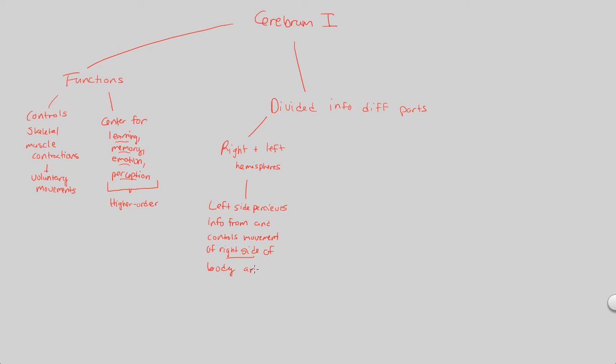And also vice versa. So what we also notice is that the right side of the cerebrum is going to perceive information from and control movement of the left side of the body. So this is kind of an opposite orientation that we see. The right part of your brain is going to control the left side of your body. The left part of your brain is going to control the right side of your body. So it's sort of that opposite orientation here.